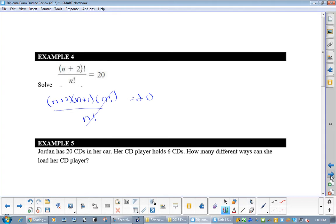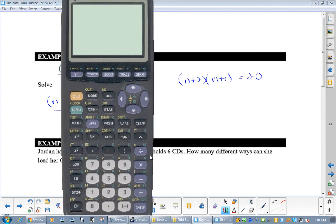These cross out. Now, I have n plus two times n plus one equals 20. And I gotta find n. Now, if you have this, we can get fancy. I can multiply it all together. I could bring the 20 over.